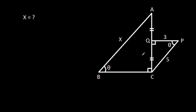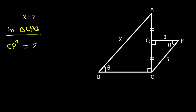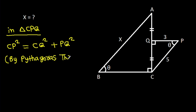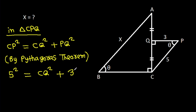In the given figure, we have to find x. In triangle CPQ, CP square will be CQ square minus PQ square by the Pythagorean theorem. CP is 5 squared, so it is CQ squared minus PQ which is 3 squared, giving us 25 equals CQ squared minus 9.